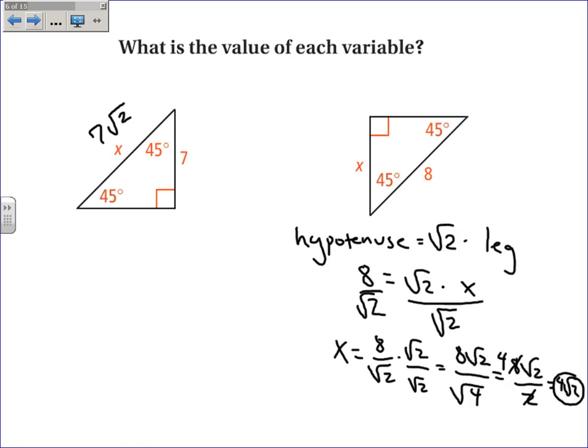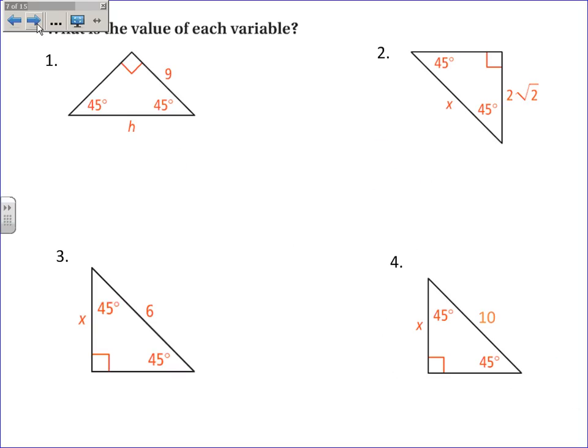There is a shortcut: in a 45-45-90 right triangle, you take the hypotenuse, divide it by 2 to get 4, then multiply by root 2. So if you take half of the hypotenuse and multiply it by root 2, that will equal the legs. Here are a couple of examples to check your work: h equals 9 root 2, x equals 4, this x equals 3 root 2, and x equals 5 root 2.